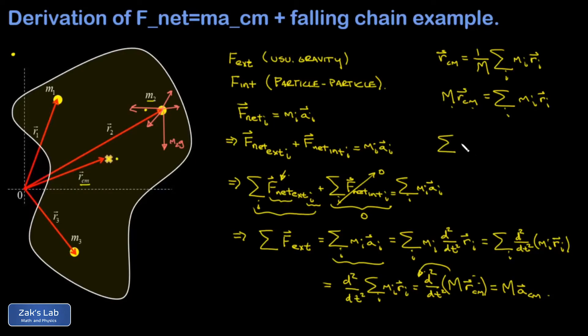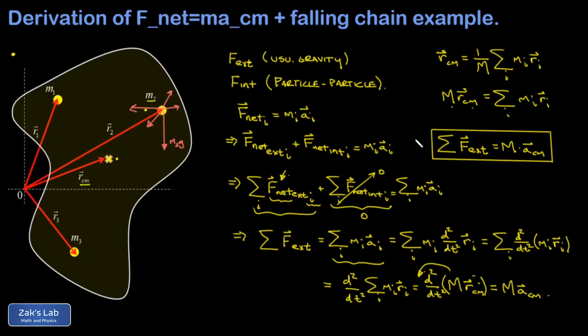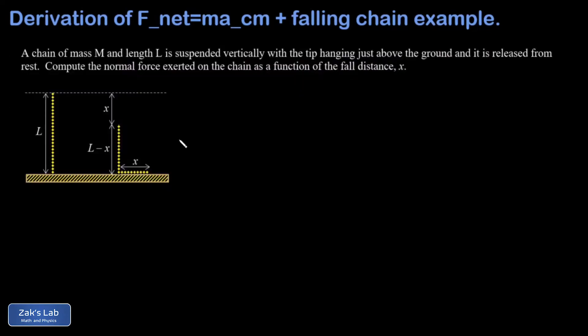That completes our derivation of a really important formula for mechanics: the sum of all external forces acting on an object equals the total mass multiplied by the center of mass acceleration. There are a variety of classic problems that require this more general approach - when you go beyond simple Atwood machines and blocks on ramps and start solving more sophisticated mechanics problems, this is often the tool you'll use. Let's check out an example.